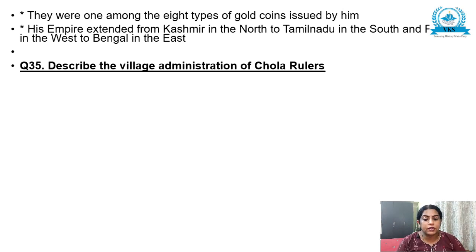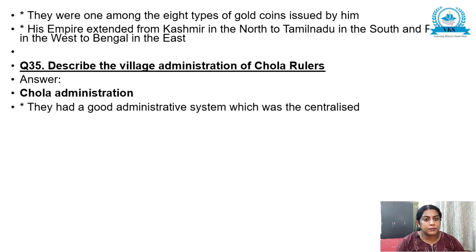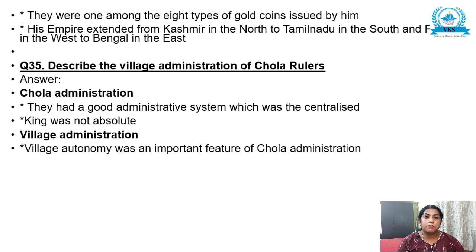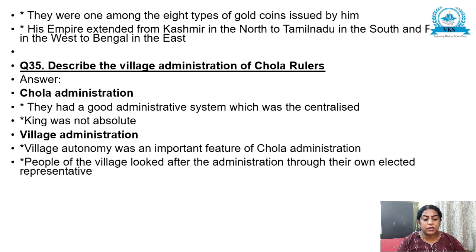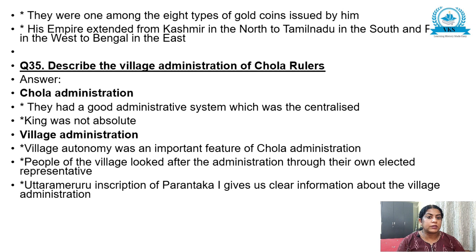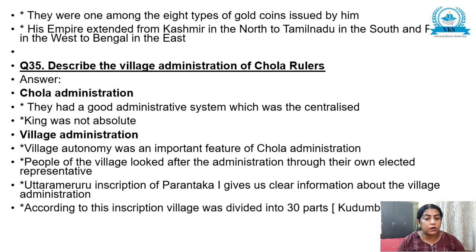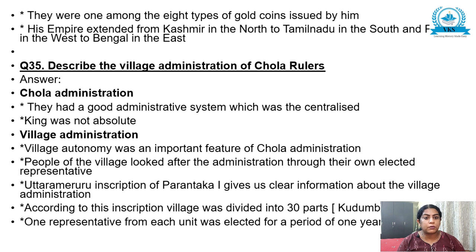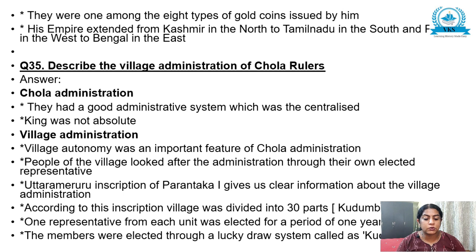The next question is regarding Chola administration. As a small introduction: they had a good administrative system which was centralized and the king was not absolute. Village autonomy was an important feature of Chola administration. People of the village looked after administration through their own elected representatives. The Uttara Merur inscription of Paranthaka I gives us clear information about village administration. According to this inscription, the village was divided into 30 parts called Kudumbu, and one representative from each unit was elected for a period of one year.